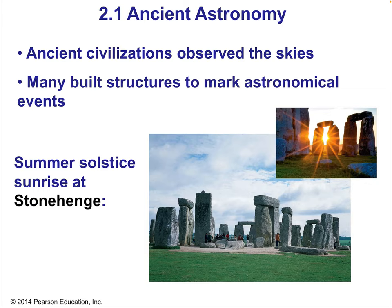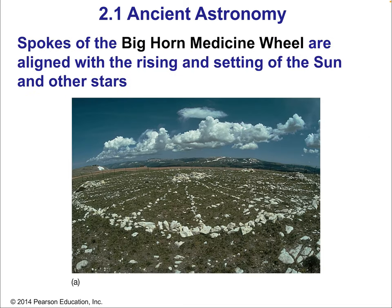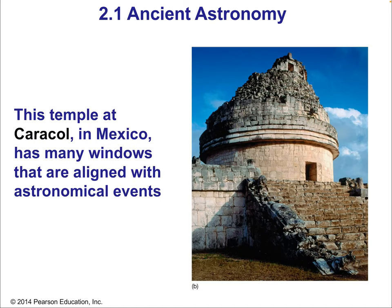We'll start way back with ancient civilizations and the acknowledgement that they looked at the skies and sought to understand them, were fascinated and moved by them. Many ancient societies built structures that marked astronomical events. Stonehenge is very much a structure matching up with astronomical events like solstices — the sun rising at a particular location on the longest or shortest day of the year. Another example is the Bighorn Medicine Wheel, which had lines matching the rising and setting of the sun and other stars. A temple in Mexico called Caracol has many windows lined with astronomical events.